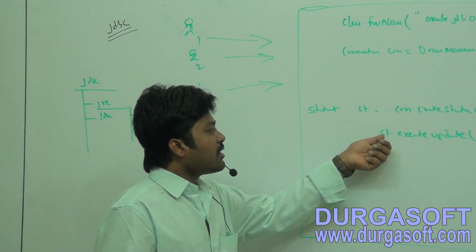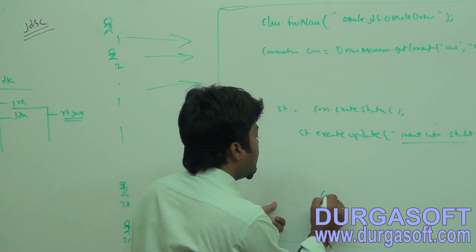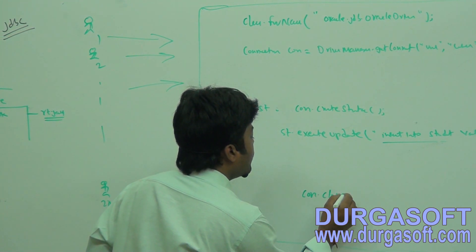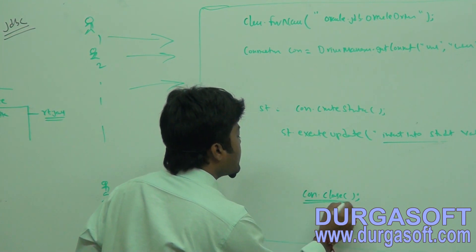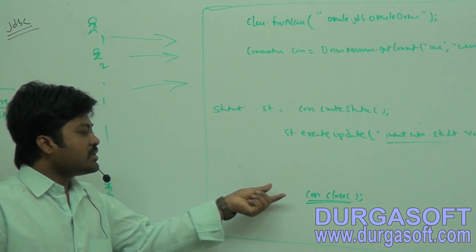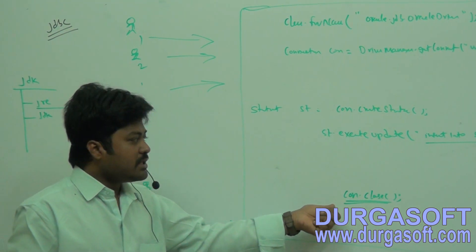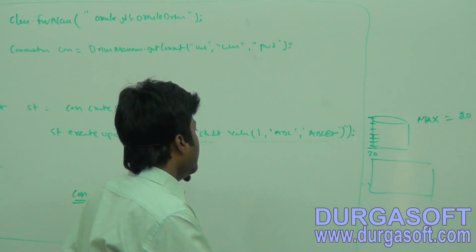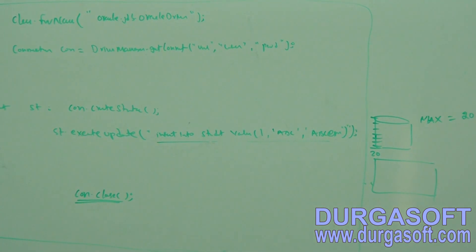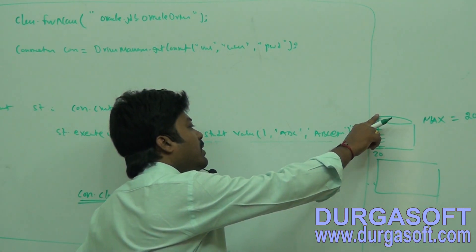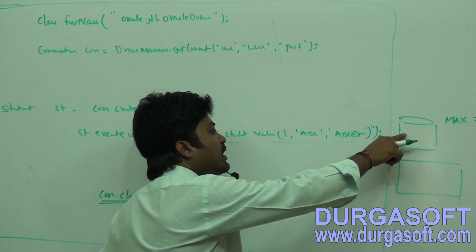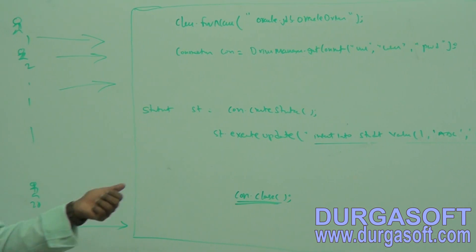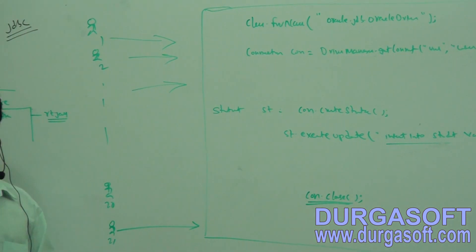Once after completion of your job, you need to intimate your JVM to close the connection resource. When you intimate JVM to close the connection, JVM will request the database to close the connection. After the first user's job completes, it will close the socket, and one by one all sockets will close. Then one more new user can request and connections will be made available.